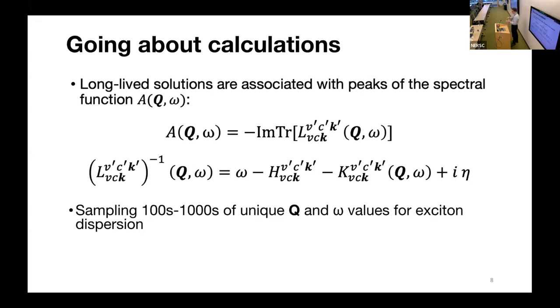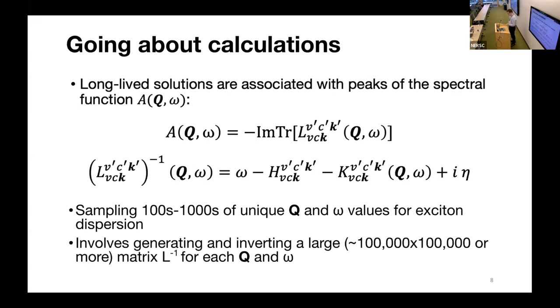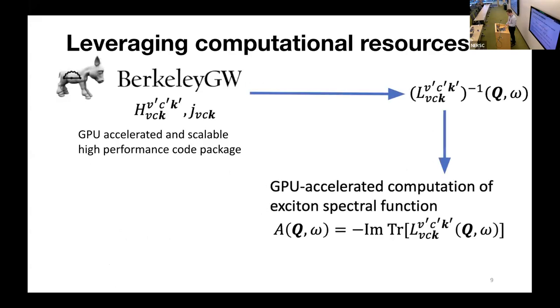As I said, this has a Q and omega dependence. So if we want to get a dispersion relation, we want to look at the energy as a function of wave vector. We need to invert this matrix for unique wave vectors and frequency values. We might need on the order of a million points in this two-dimensional space, which means we have to invert a million matrices that are already quite large.